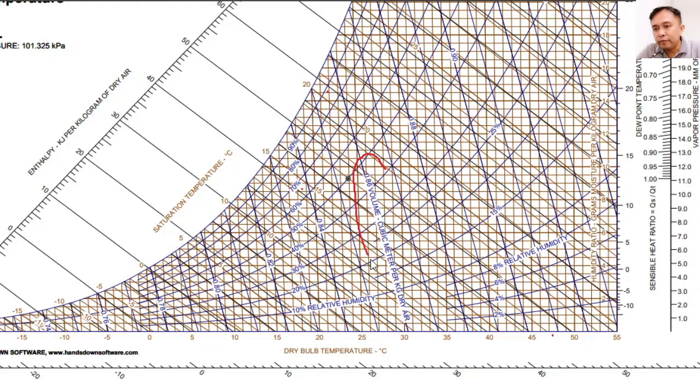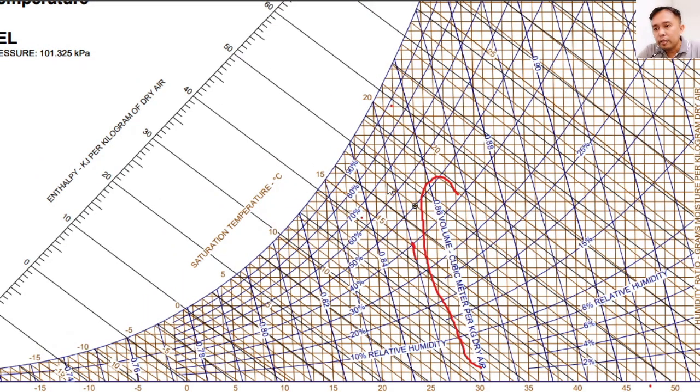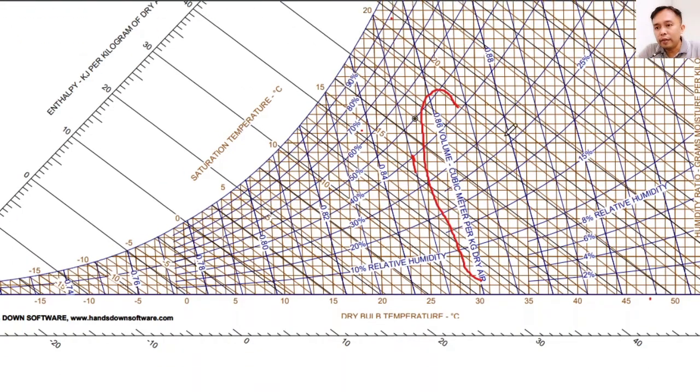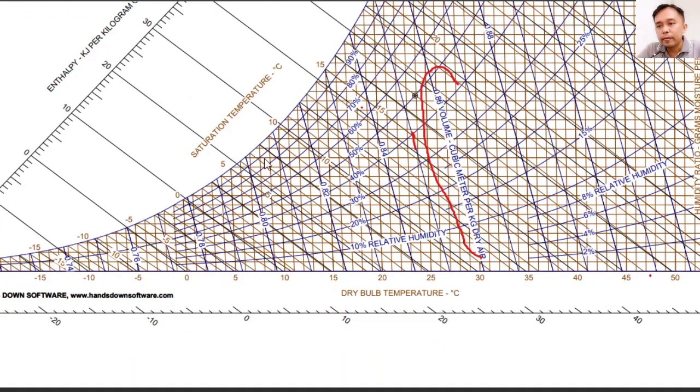Also, we have the specific volume, having a unit of cubic meter per kilogram dry air. And from left to right, your volume increases in value. So this one, we have 0.80, 0.82, 0.84, 0.86, 0.88, and so on.